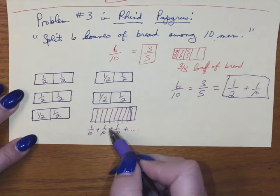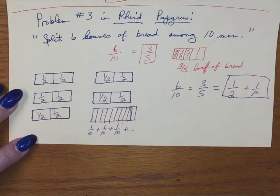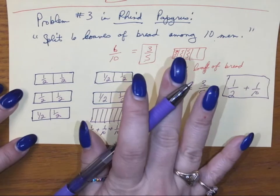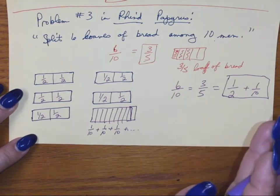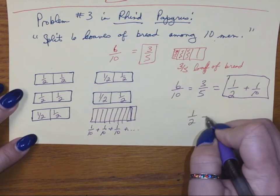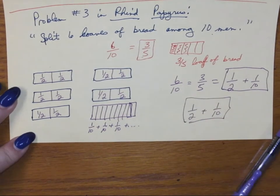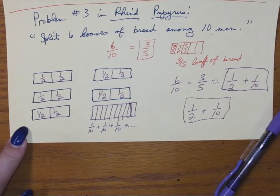So they got a half of a loaf out of these five, plus they get a tenth of a loaf out of this. So it's actually really pretty straightforward. This is the way that the scribes solved it in problem number three on the Rhind Papyrus. So they ended up with 1/2 plus 1/10.